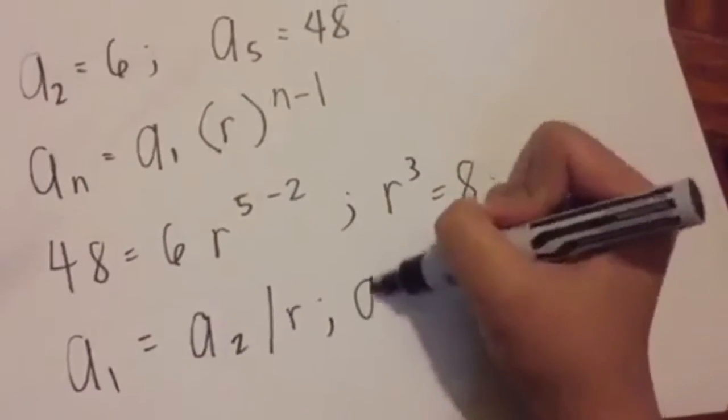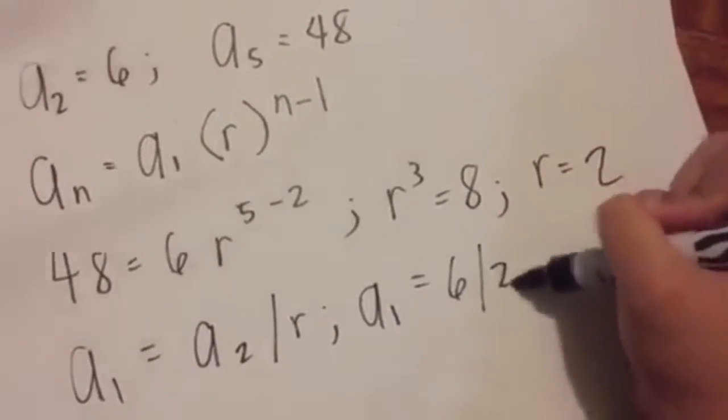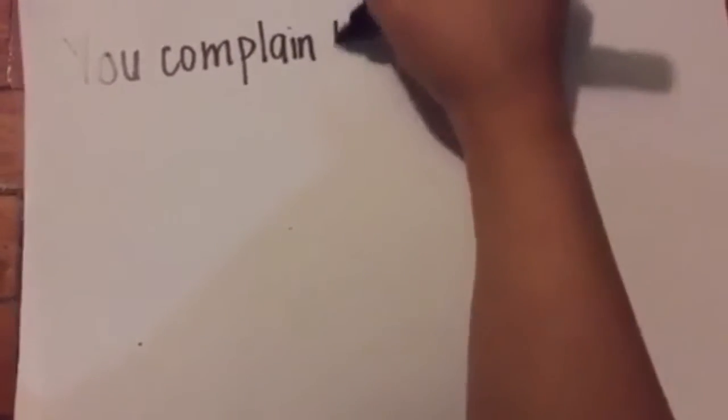Using your rooting skills you get r equals 2. Now simplify: a1 equals a2 divided by r, so a1 equals 6 over 2 and you get 3. That is your a1.